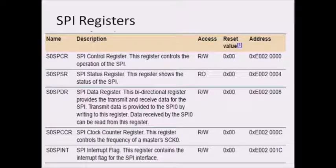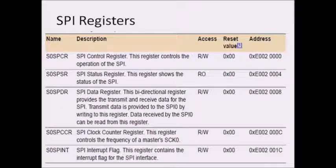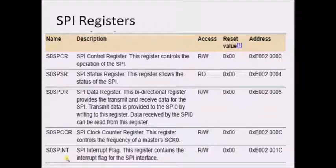Now let us see the registers we need to program inside the SPI peripheral. These are SPCR (the control register, used for controlling the functionality of the complete peripheral), SPSR (the status register, used to monitor whether transmission or reception completed successfully), the data register similar to the buffer register in asynchronous communication, the clock counter register for setting the transmission frequency, and the interrupt flag register.